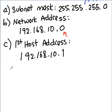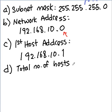And what is the last host address? In order to determine the last host address, we need to find the total number of hosts. So how do we find the total number of hosts? In this case, we need to use the formula 2 to the power of n minus 2, where n is the number of hosts.